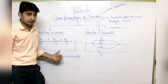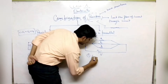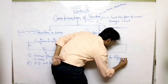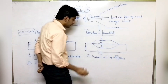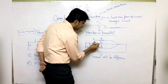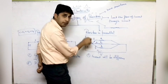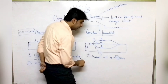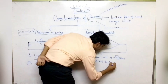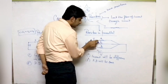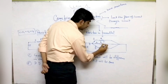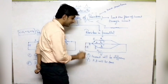In parallel, the exact opposite happens. Current will be different through each resistor — the total current I will be divided into I1, I2, and I3 when connected in parallel. But the potential difference will be the same across each resistor. So in parallel: different current, same potential difference.